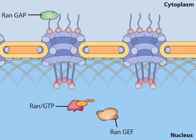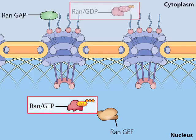By the actions of RAN-GEF found only in the nucleus and RAN-GAP found only in the cytoplasm, a steep gradient of RAN-GTP and RAN-GDP is maintained across the nuclear membrane, with RAN-GTP inside the nucleus and RAN-GDP in the cytoplasm.